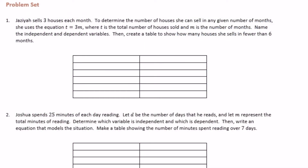6th grade module 4 lesson 31 problem set. Josiah sells three houses each month. To determine the number of houses she can sell in any given number of months, she uses the equation t equals 3 times m, where t is the total number of houses sold and m is the number of months. Name the independent and dependent variables, then create a table to show how many houses she sells in fewer than six months.